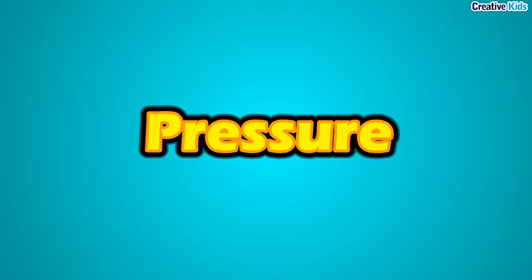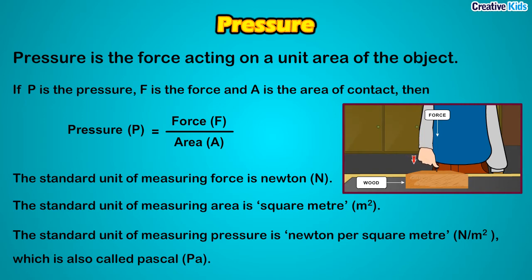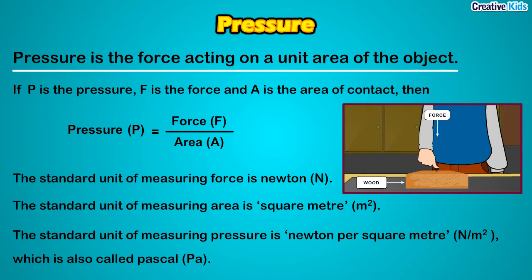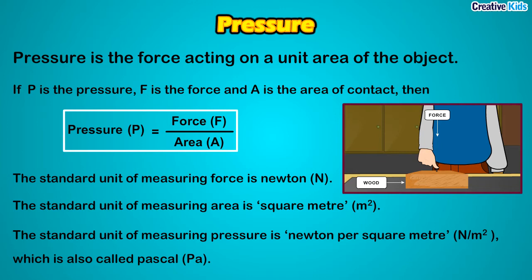Let us now study the concept of pressure. The force is applied on an object and its effect is on the area of contact. Force acting on a unit area of the object is measured by a physical quantity called pressure. Pressure is the force acting on a unit area of the object. If P is the pressure, F is the force, and A is the area of contact, then pressure P equals force F divided by area A.